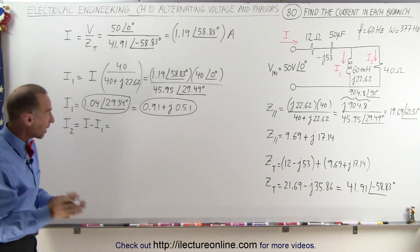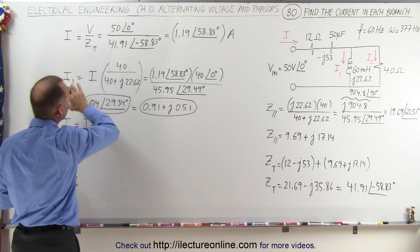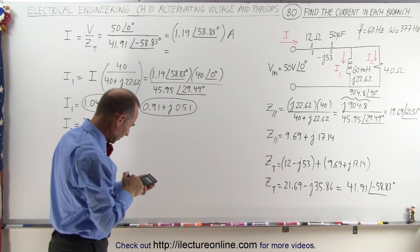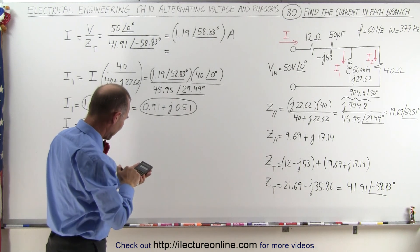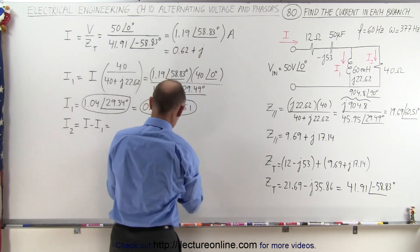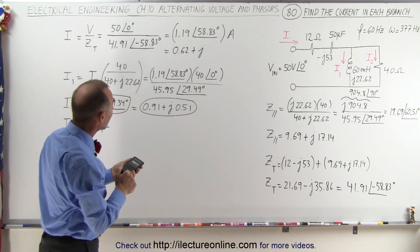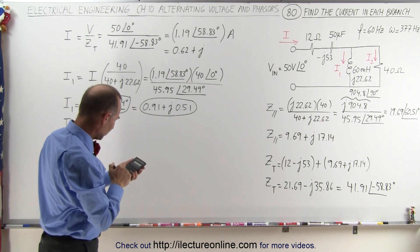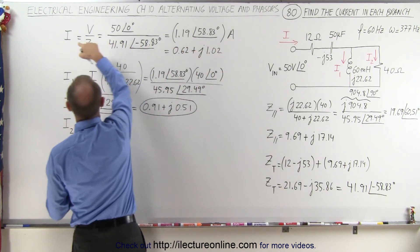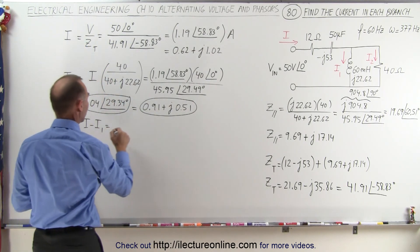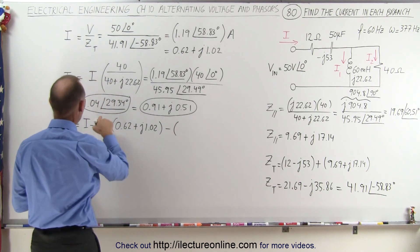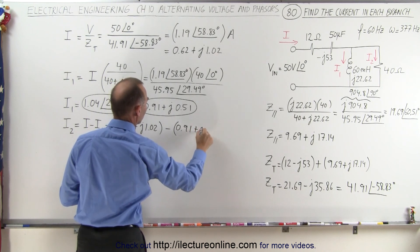Now we're going to find I2 by subtracting I1 from the total current. To do that, we have to convert the total current into real and imaginary parts. Cosine of 58.83 times 1.19 gives us 0.62, plus J; sine of 58.83 times 1.19 gives us 1.02. So the total current is 0.62 plus J1.02. Now we take that current and subtract I1, which is 0.91 plus J0.51.